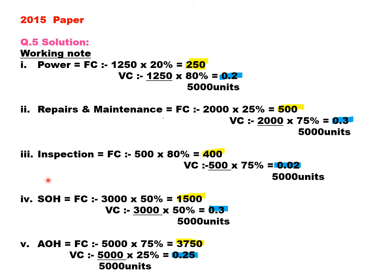Inspection: total is 500, in which 80% is fixed and 20% is variable. Fixed cost: 500 into 80% = 400; we don't divide by 5000 units because we want the total. Variable cost: 500 divided by 5000 into 20% = 2 paisa. Similarly, calculate for selling overhead — total 3000, 50% is fixed: 3000 into 50% = 1500. Variable: 3000 divided by 5000 units into 50% = 30 paisa. Similarly, calculate for administration overhead. All these costs are semi-variable — a part is variable and a part is fixed.